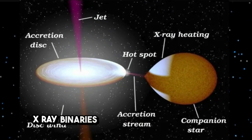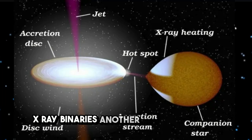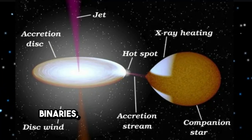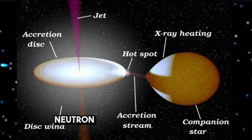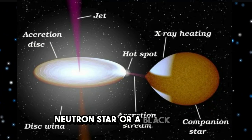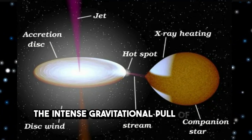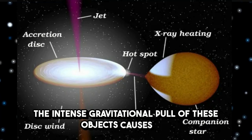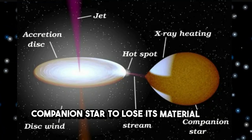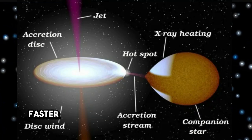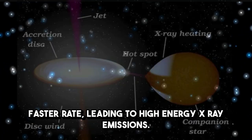Another example is X-ray binaries, where the accreting object could be a neutron star or a black hole. The intense gravitational pull of these objects causes the companion star to lose its material at a much faster rate, leading to high-energy X-ray emissions.